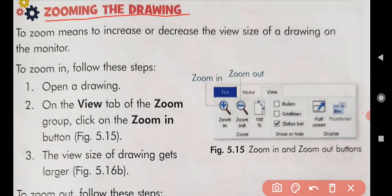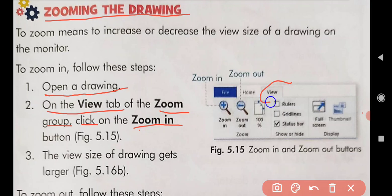First of all, we have to open a drawing. After that, on the View tab — on the View tab of the Zoom group — click on the Zoom In button. When we open our drawing, we will go to the View tab. Here is the View tab. In the View tab, we will find the Zoom group.